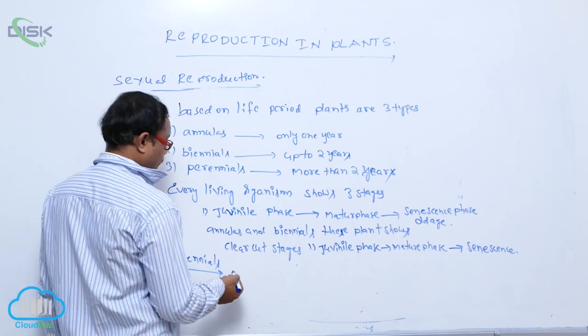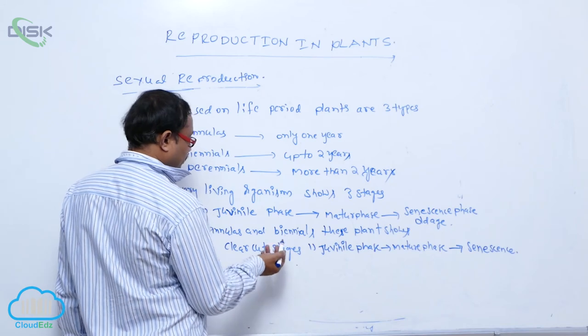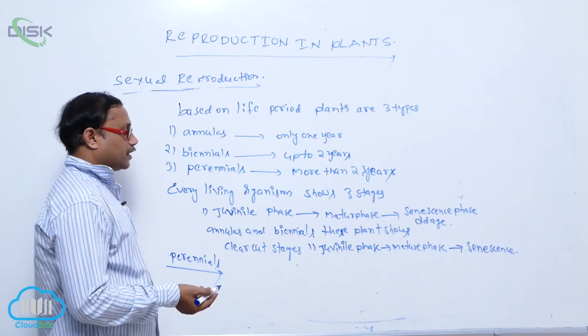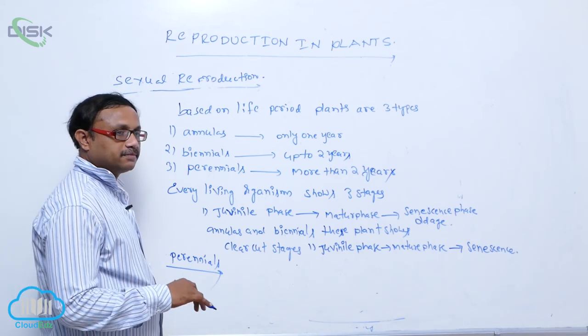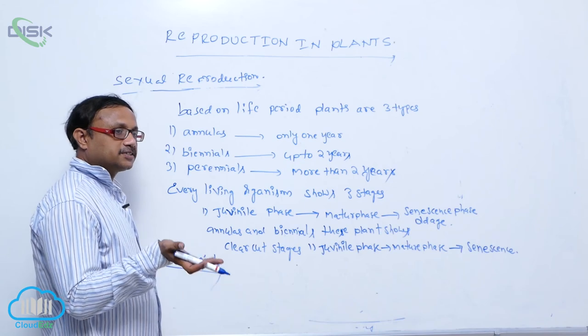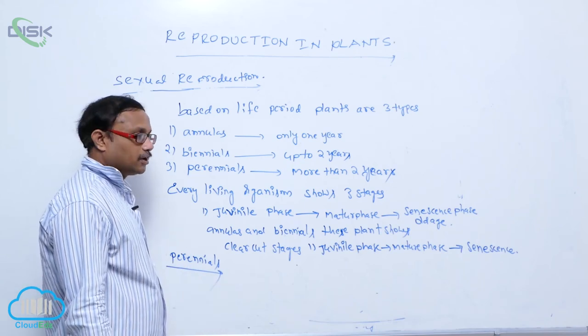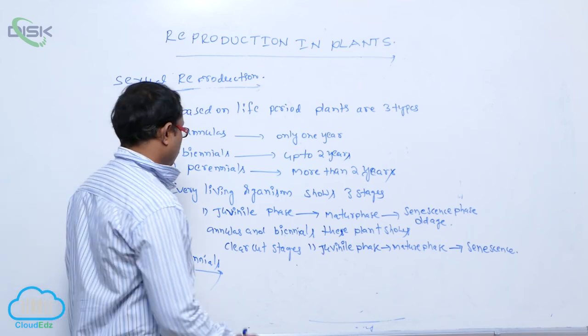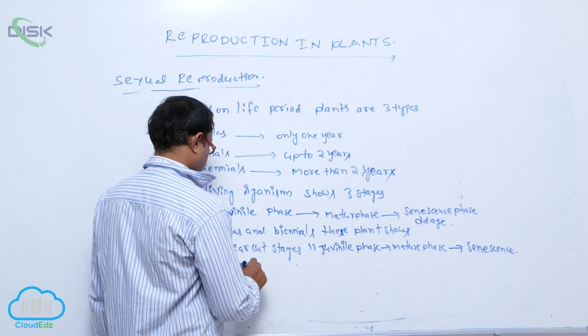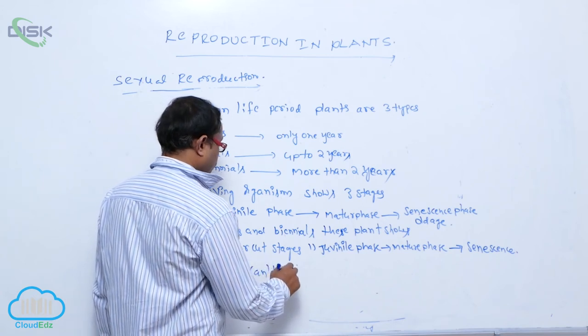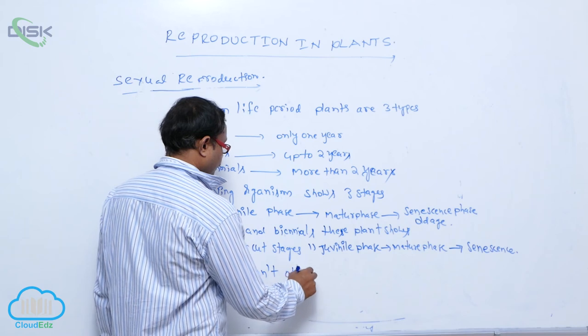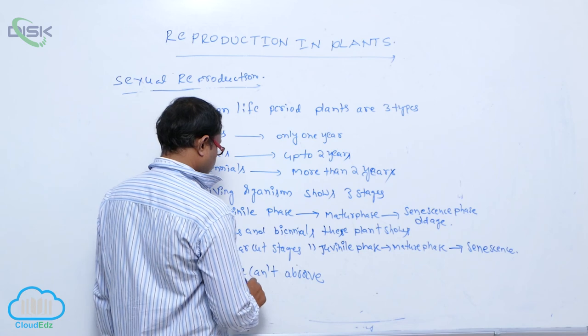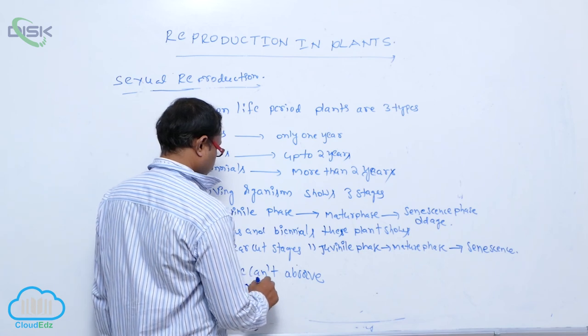The flowers are formed continuously. So we cannot identify which one is the juvenile phase, which one is the reproductive phase. After formation of the flower, after some time again, these plants develop vegetative phase and again produce flowers. So in perennial plants, we cannot observe three stages.